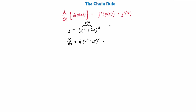Then we multiply all this by g'(x), the derivative of what's inside the bracket. The derivative of x³ is 3x², and the derivative of 2x is just plus 2. So we would call this the derivative of the composite function, and we would usually leave it as is.